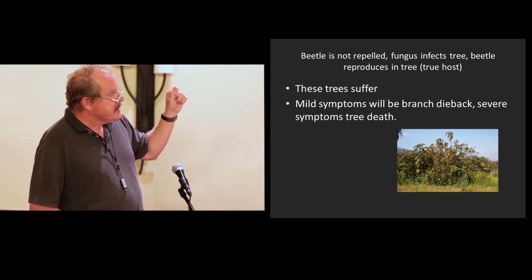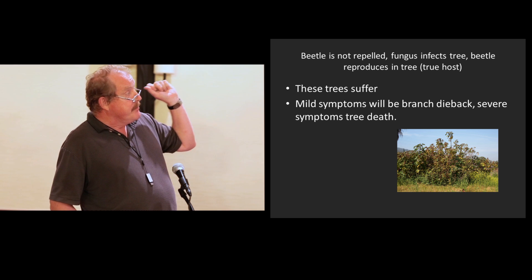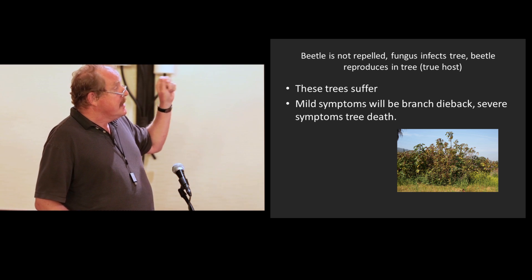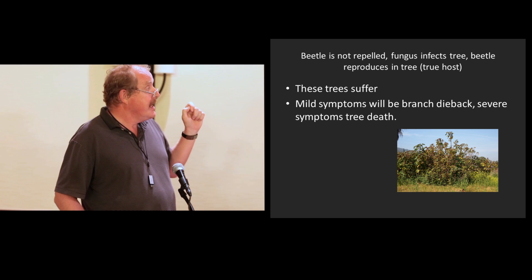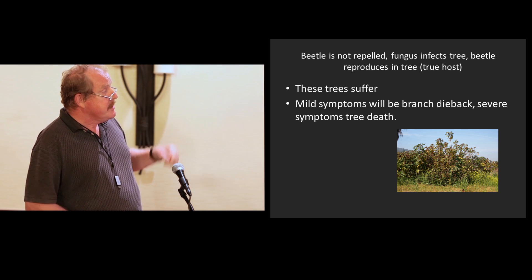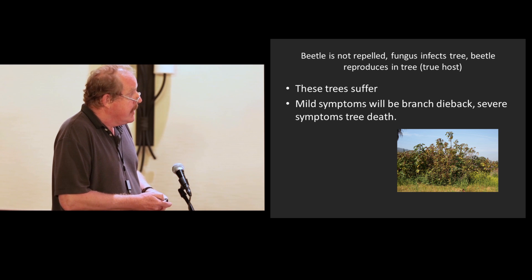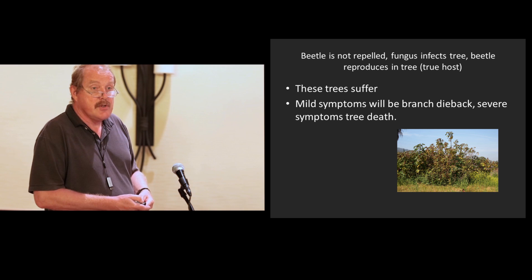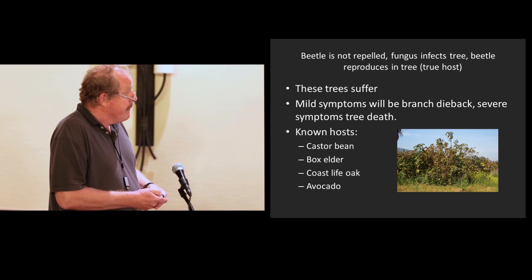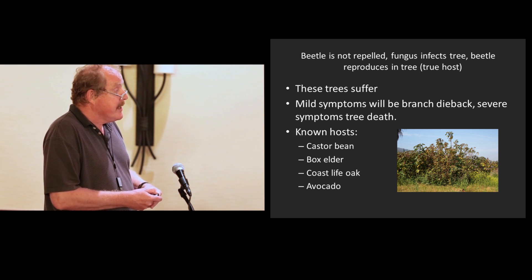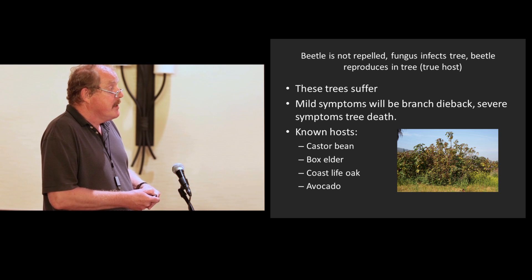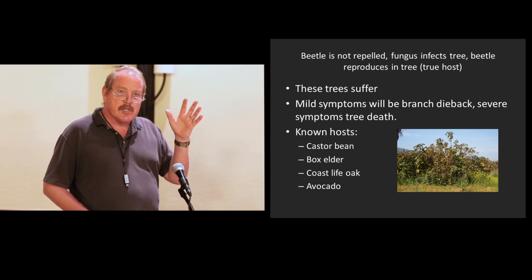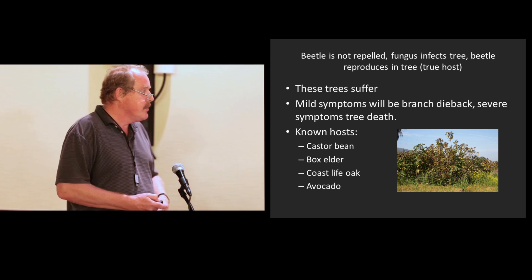The beetle is not repelled. The fungus infects the tree, and the beetle reproduces in the tree. So it's a true host, this tree. These trees suffer, because they end up generally dying. Initially, you see just some branch dieback. And what you see here is a castor bean. Castor bean is a very good host for this beetle. Other known hosts are box elder, coast live oak, and avocado. And there's still a number of trees that we suspect may be hosts, but we haven't really determined it yet.